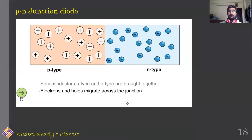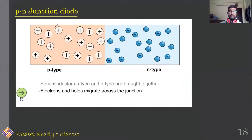In today's session we will be learning about the p-n junction diode, which is an important electronic device constructed by using p-type and n-type semiconductors. We will learn what a p-n junction diode means, how it is constructed, and what its uses are.